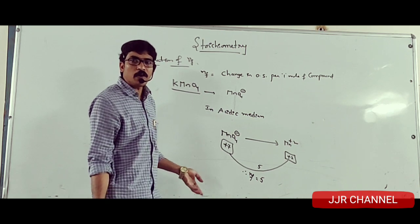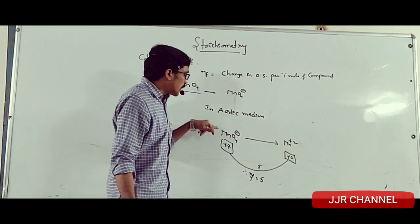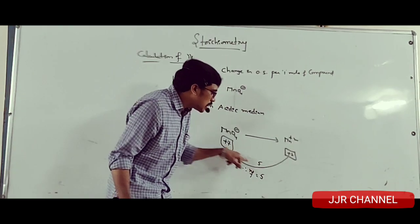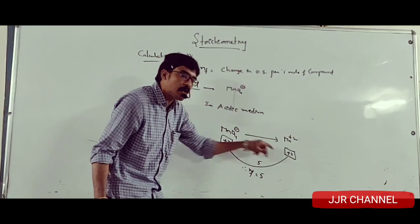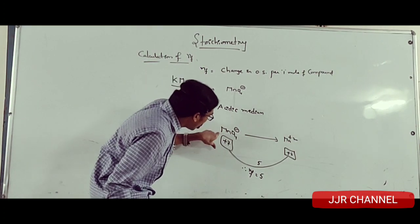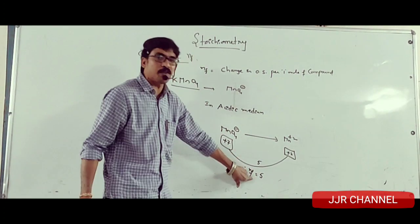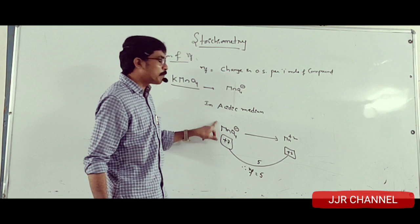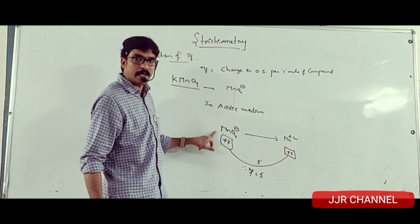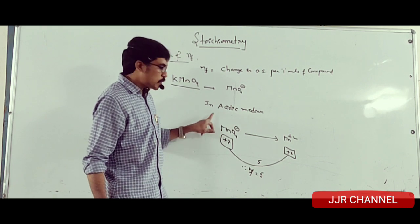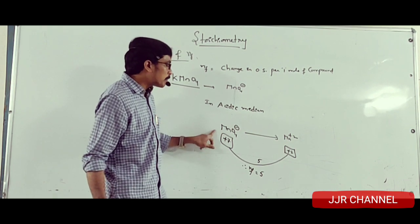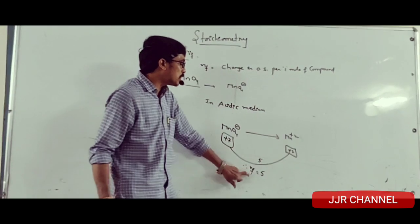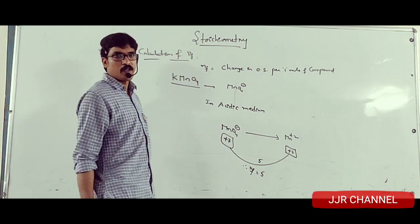Why is it five? By definition, n-factor is the change in oxidation state per one mole of the compound. Here, from one mole of permanganate, the change in oxidation state is five. That is why n-factor is five.